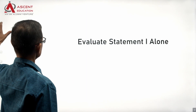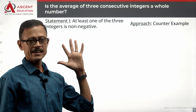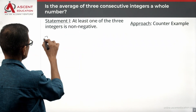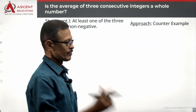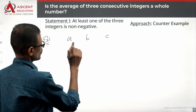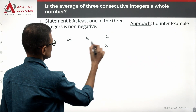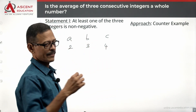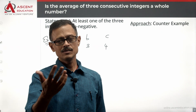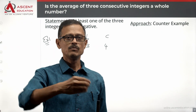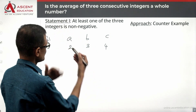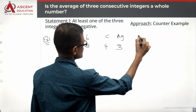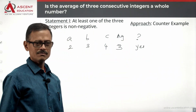Take a look at Statement 1: at least one of the three integers is non-negative. Let's take integers A, B, C to be 2, 3, 4. Is at least one of these numbers non-negative? Yes — all three are non-negative. The average equals 2 plus 3 plus 4 divided by 3, which is 9 divided by 3, equals 3. Is it a whole number? The answer is yes.